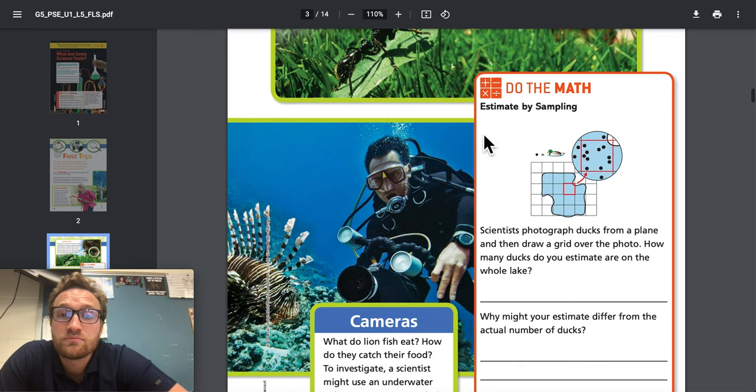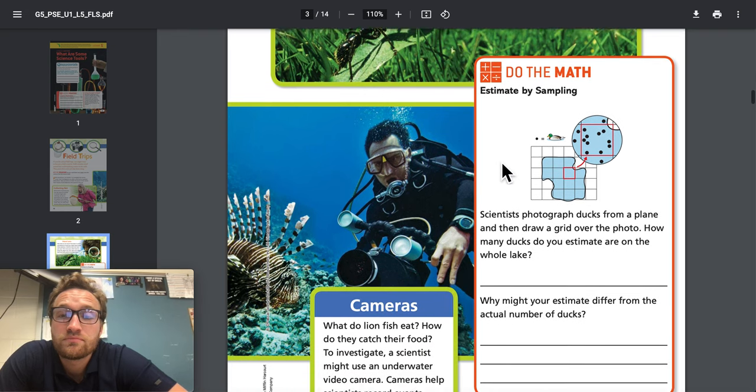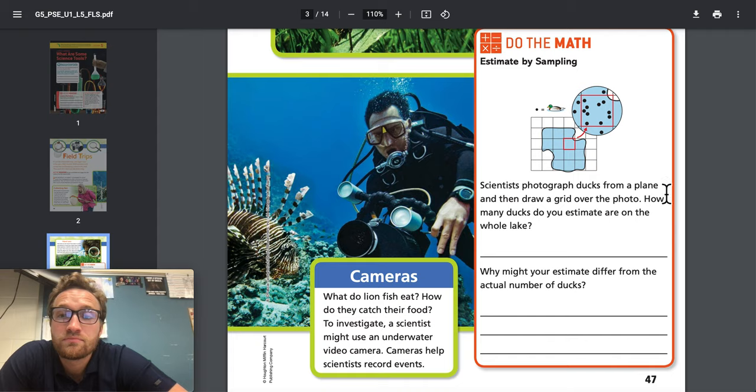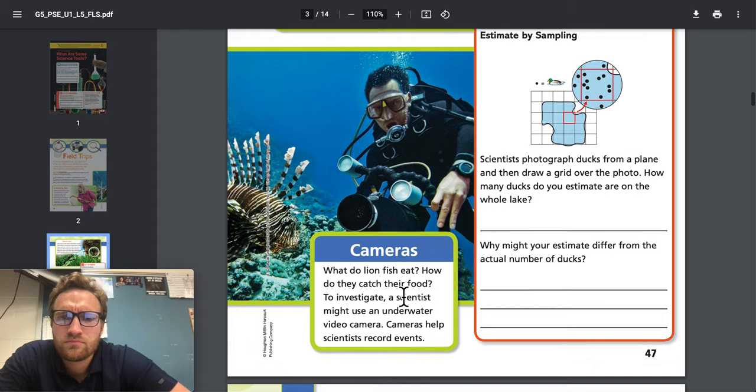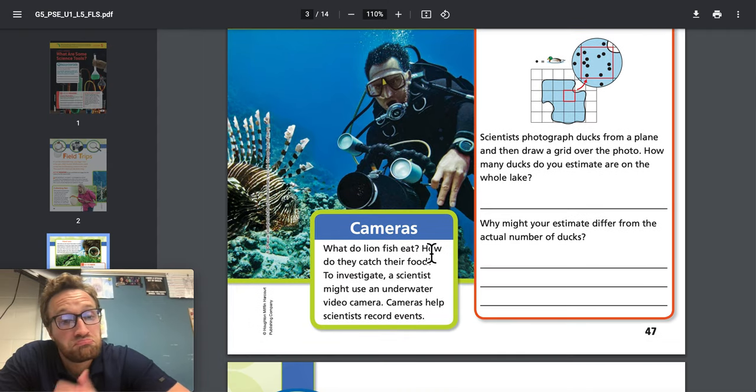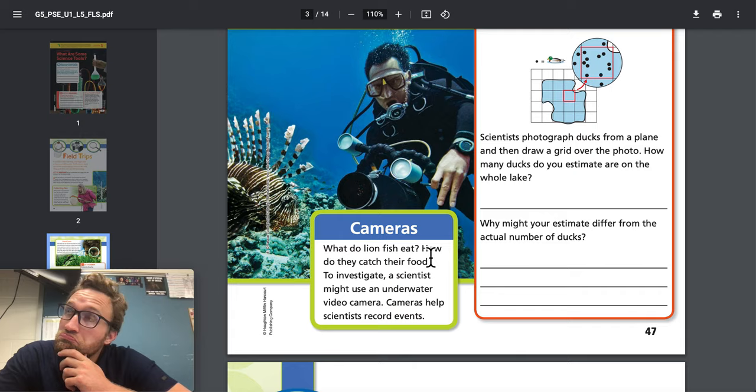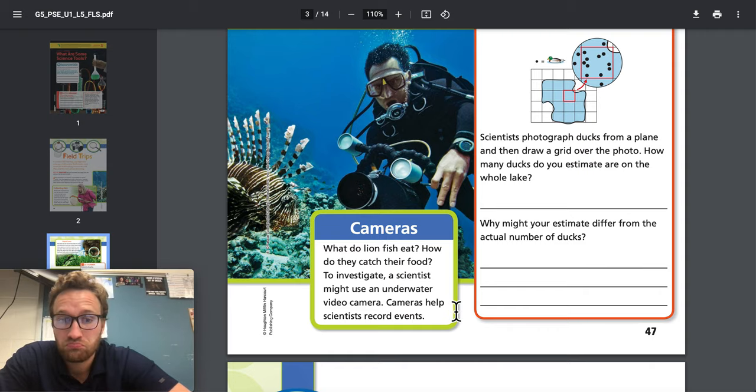Do the math: Estimate by sampling. Scientists photograph ducks from a plane and then draw a grid over the photo. How many ducks do you estimate are on the whole lake? Why might your estimate differ from the actual number of ducks? Cameras: What do lionfish eat? How do they catch their food? To investigate, a scientist might use an underwater video camera. Cameras help scientists record events.